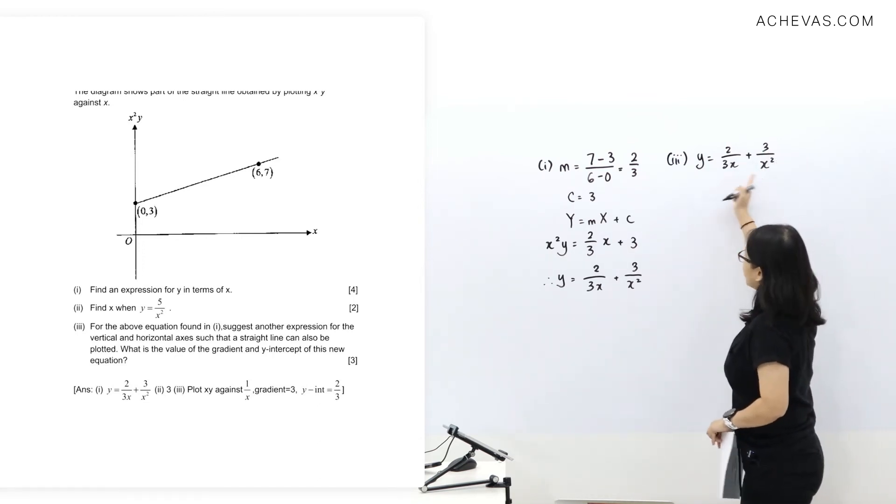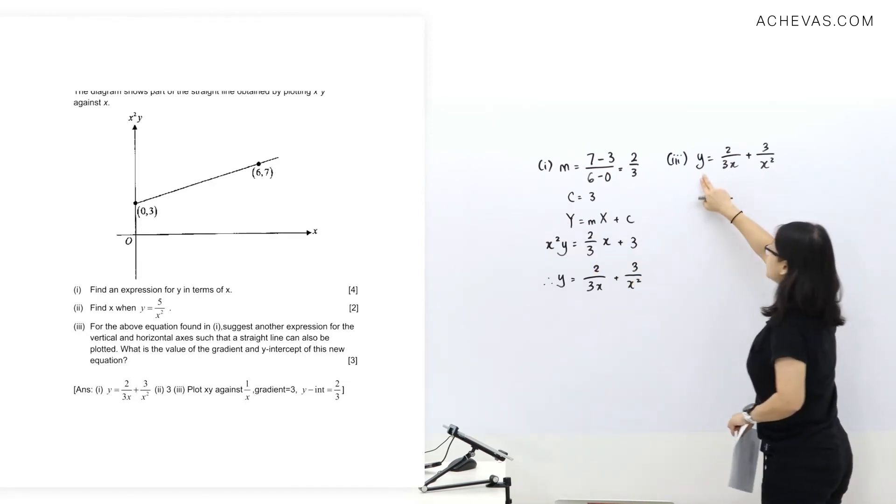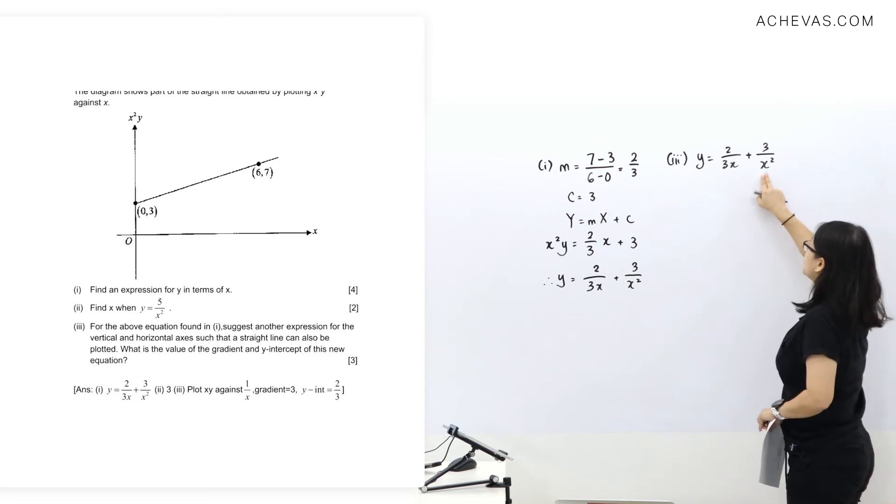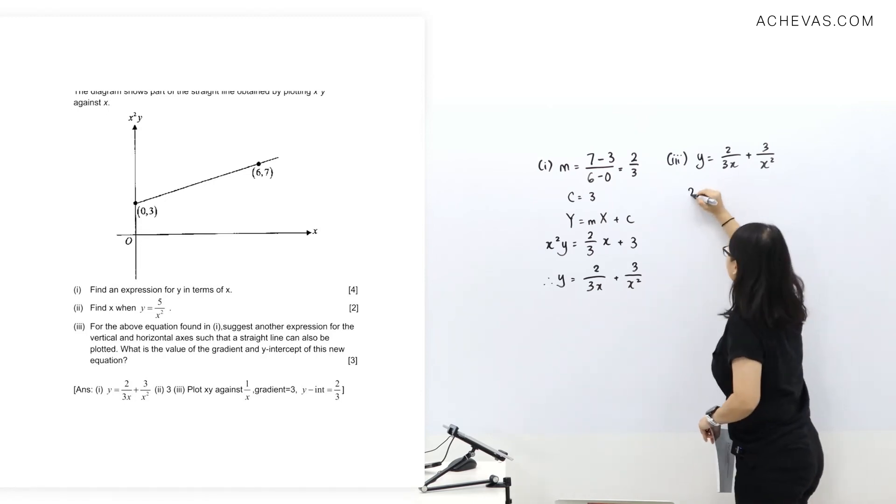So just now, we have the y-axis value as x squared y. So I don't want to do the same thing. I don't want to multiply this x squared. But instead, I'm going to multiply by x. So then I'll make this term a constant. So we're going to multiply by x.